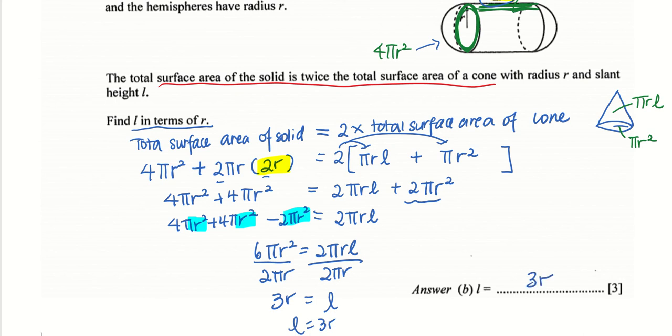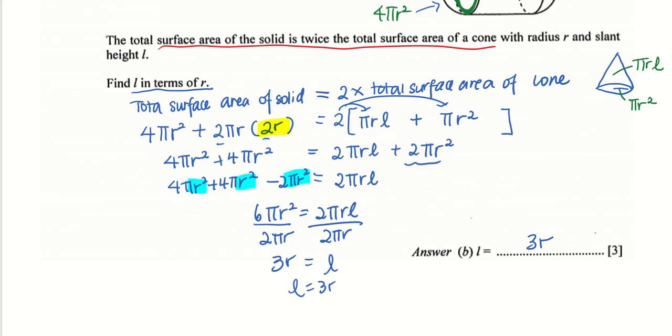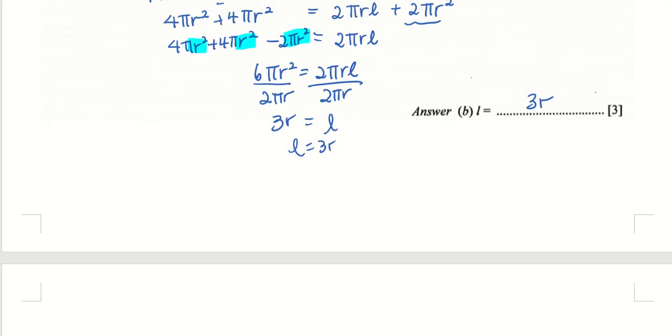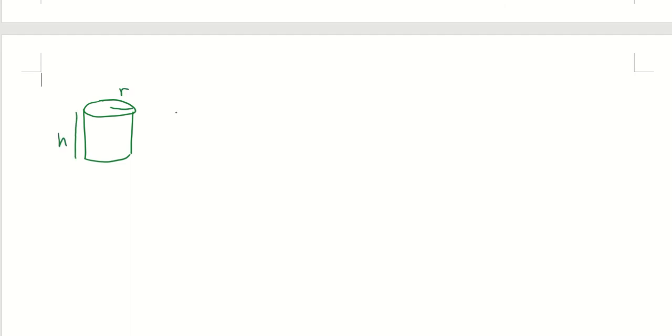Have you gotten your answer? This component will be tested in your upcoming test as well, so please do a quick revision and memorize all the different formulas for the different solids. Let's do a quick summary sheet. First, we start with the cylinder — radius r, height h.